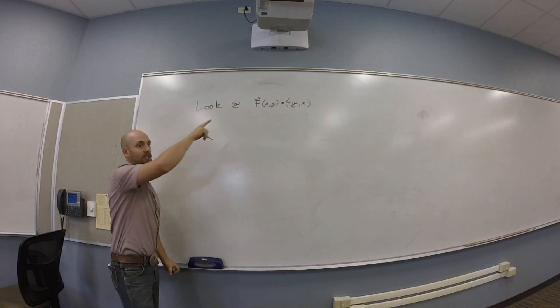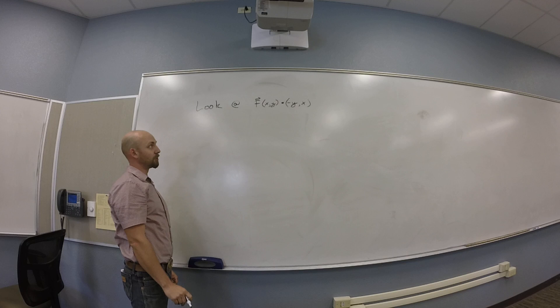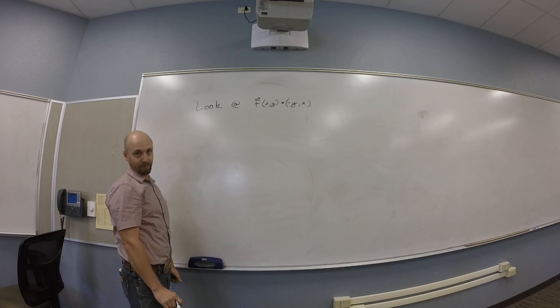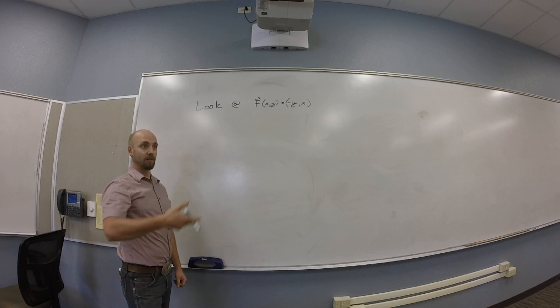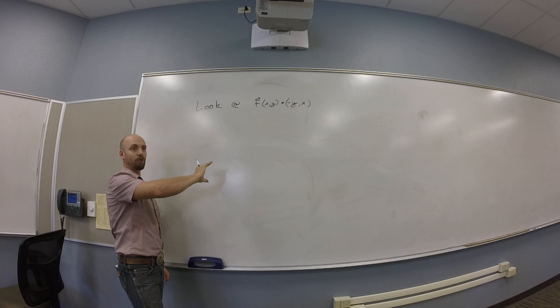So let's consider f of x and y is minus y comma x. What did you guys find that this does? This does some kind of counterclockwise spiral.